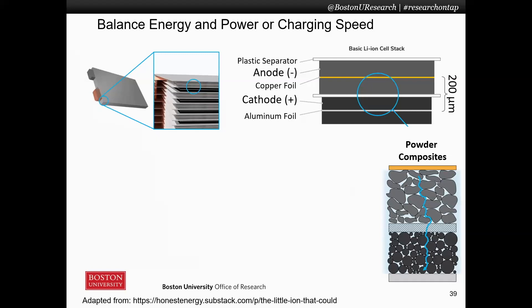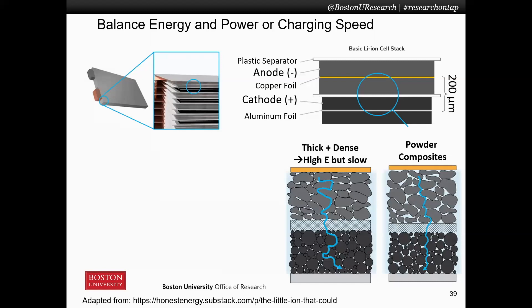There are two key metrics that matter in a battery, especially when we think about things like electronics or electric vehicles. One of them is energy — how much energy can you put into a battery? And that is determined by how much material that actually stores the energy is part of your battery: what's the fraction of your charge-storing anode and cathode material. So if you want to make a battery with a lot of energy in it, you want to make these two layers here very thick and very dense. That way you increase the fraction of your energy-storing materials and you store more energy per volume or weight.